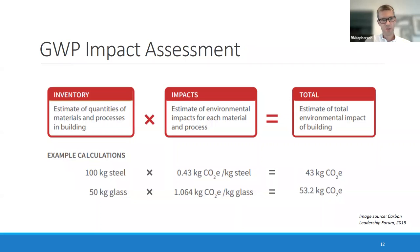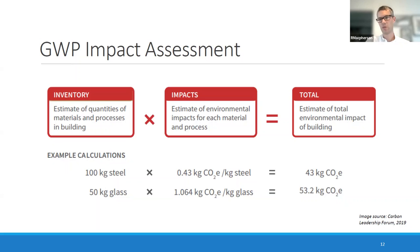The impact assessment itself is fairly straightforward: you take your quantity — say 100 grams of steel from your material takeoffs — apply the carbon intensity from your EPD, and that gives you a total absolute embodied carbon value. You then effectively sum all of these up across all materials and that gives you the building total.